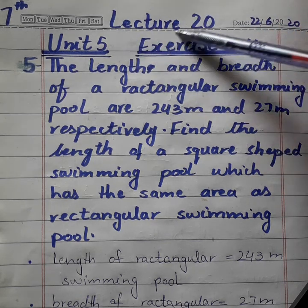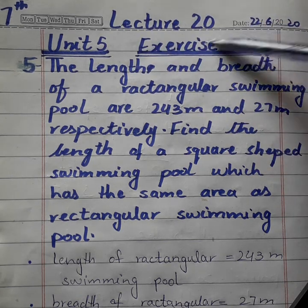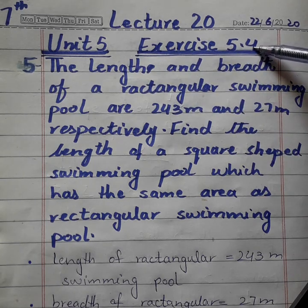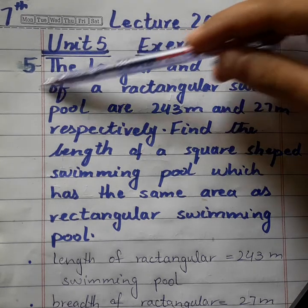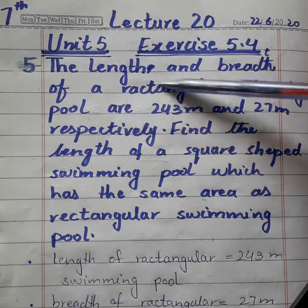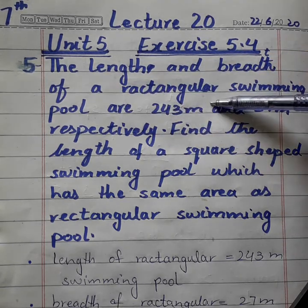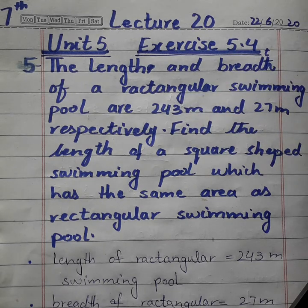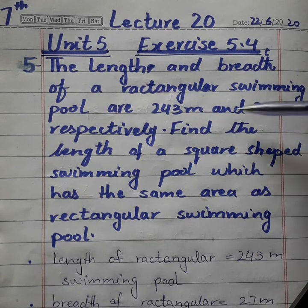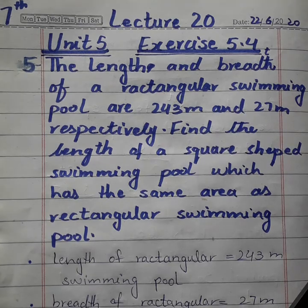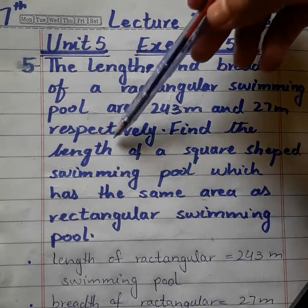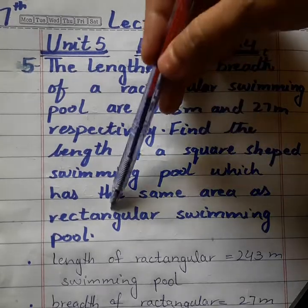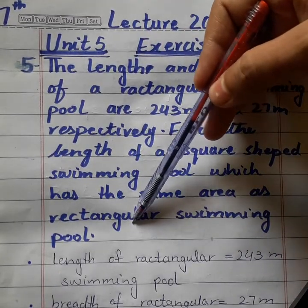Assalamualaikum. 7th class ka lecture number 20 hai. Humare paas unit number 5, exercise number 5.4, question 1 to 4 ho gay hain. Question number 5 hai: the length and breadth of a rectangular swimming pool are 243 meter and 27 meter respectively. Find the length of a square shaped swimming pool which has the same area as the rectangular swimming pool.